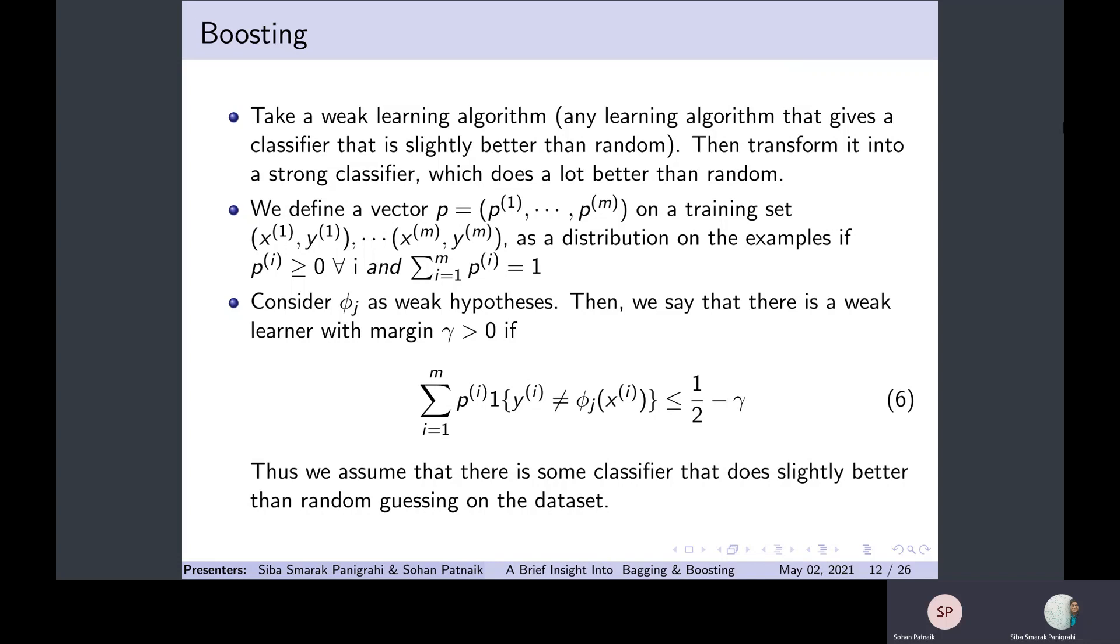Consider the binary classification problem again. Now, we have a weak learning algorithm. Briefly speaking, what is a weak learning algorithm? Suppose any algorithm that gives a classifier that is slightly better than random - that is known as a weak learning algorithm.